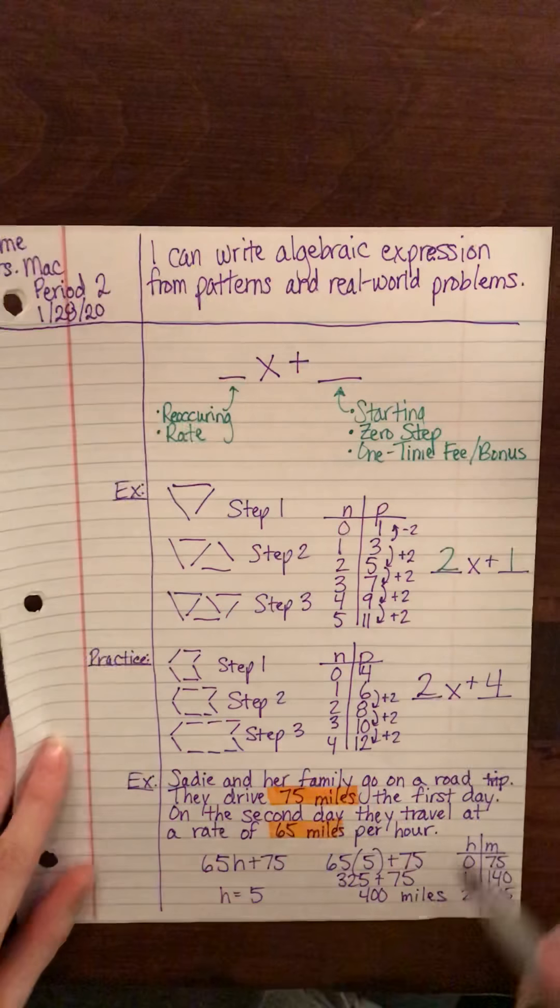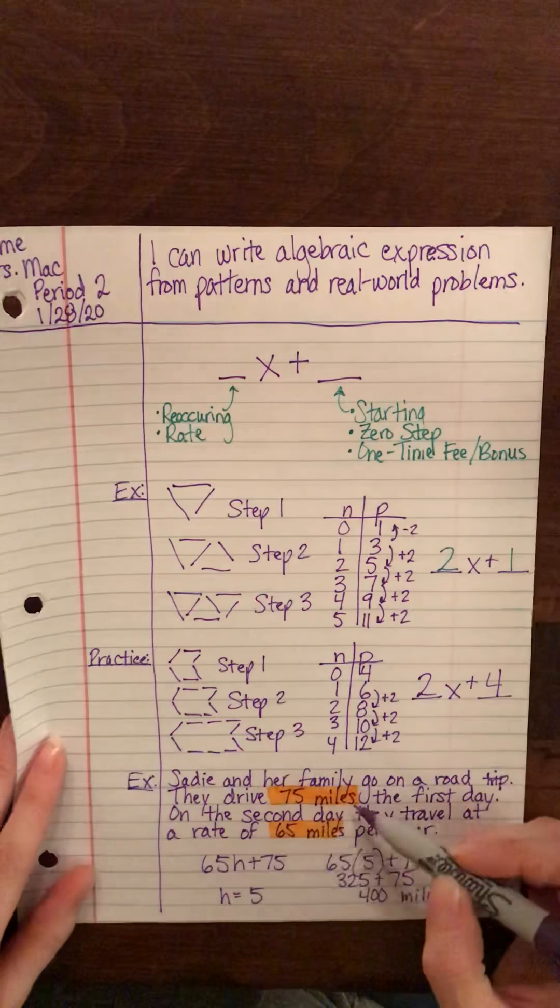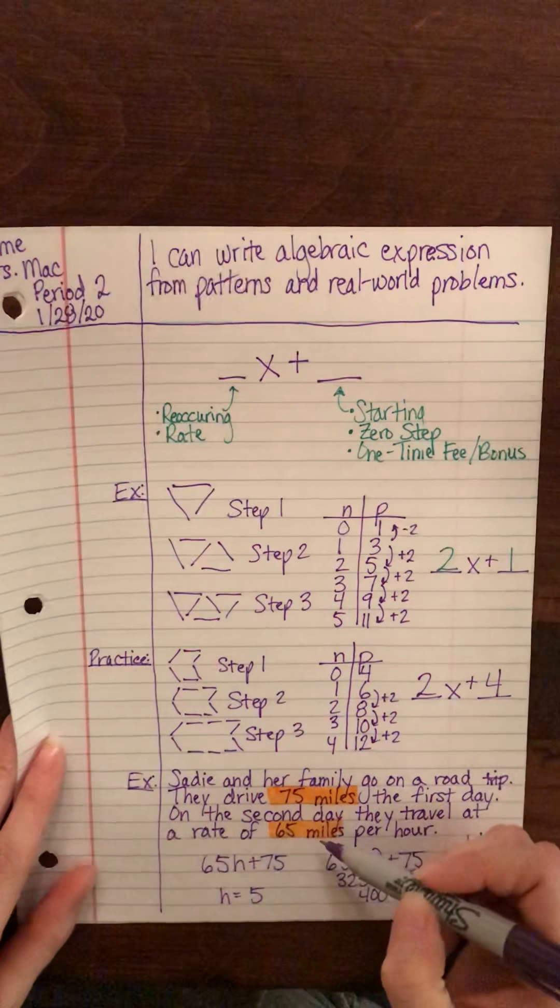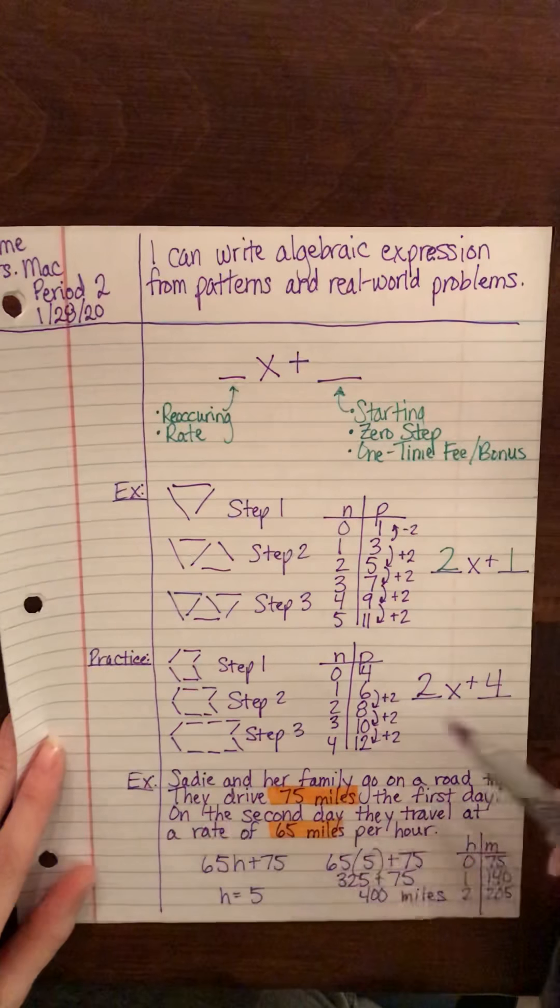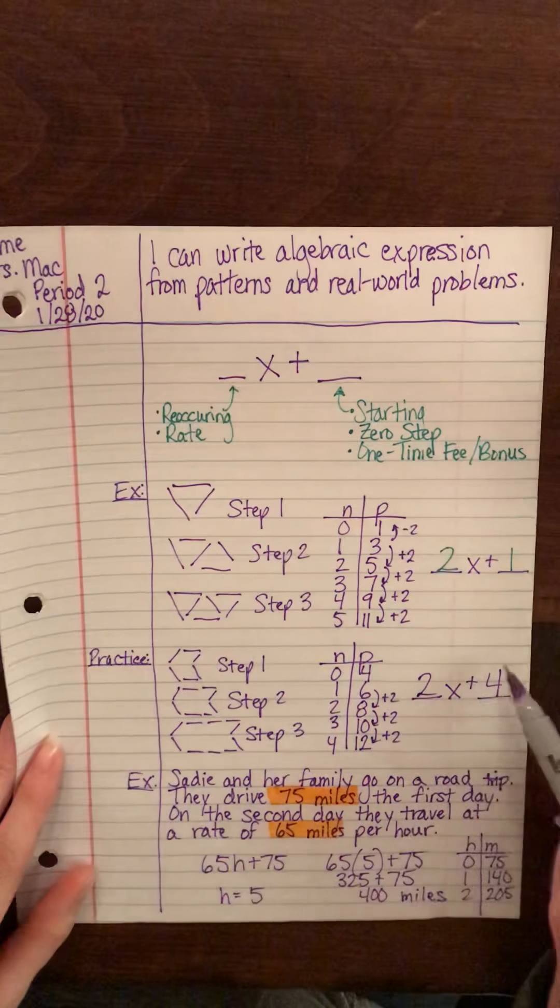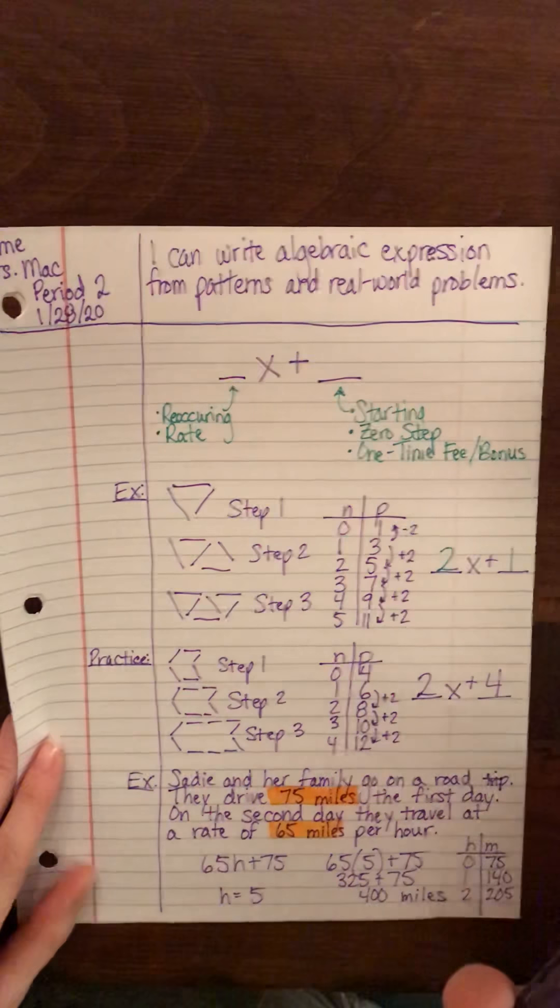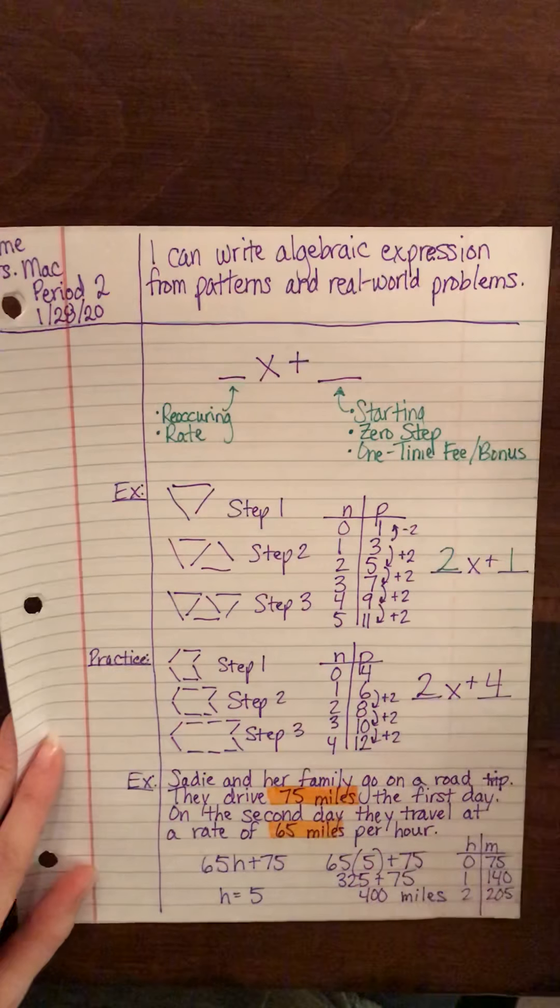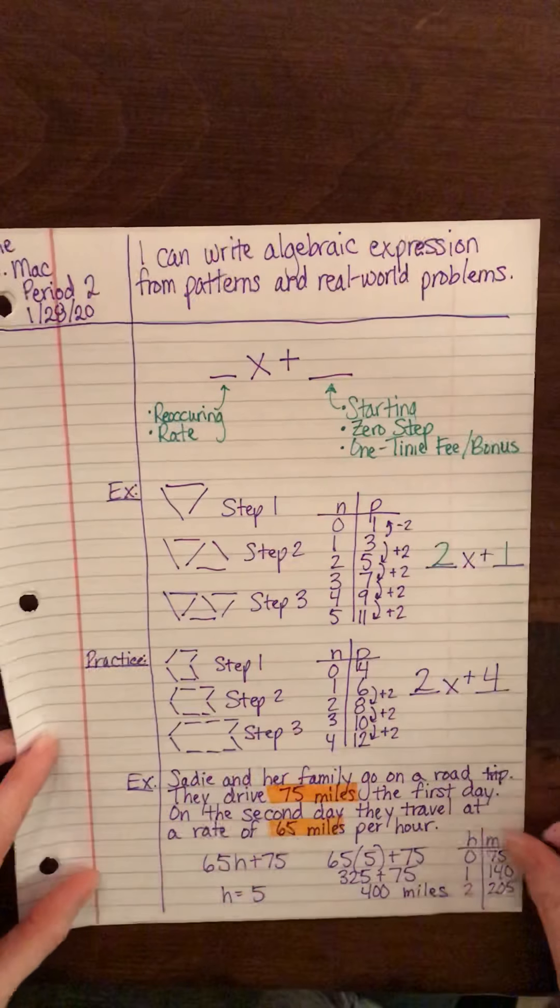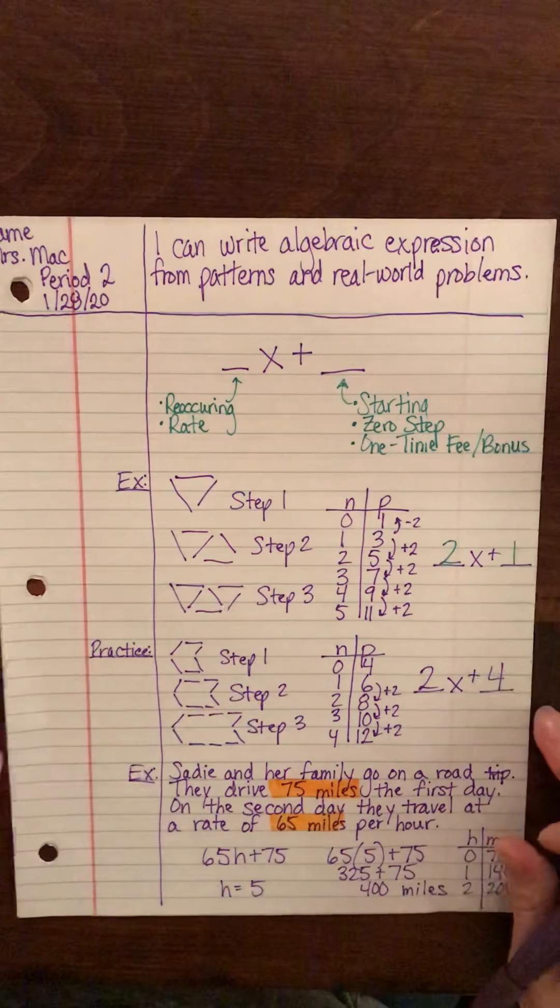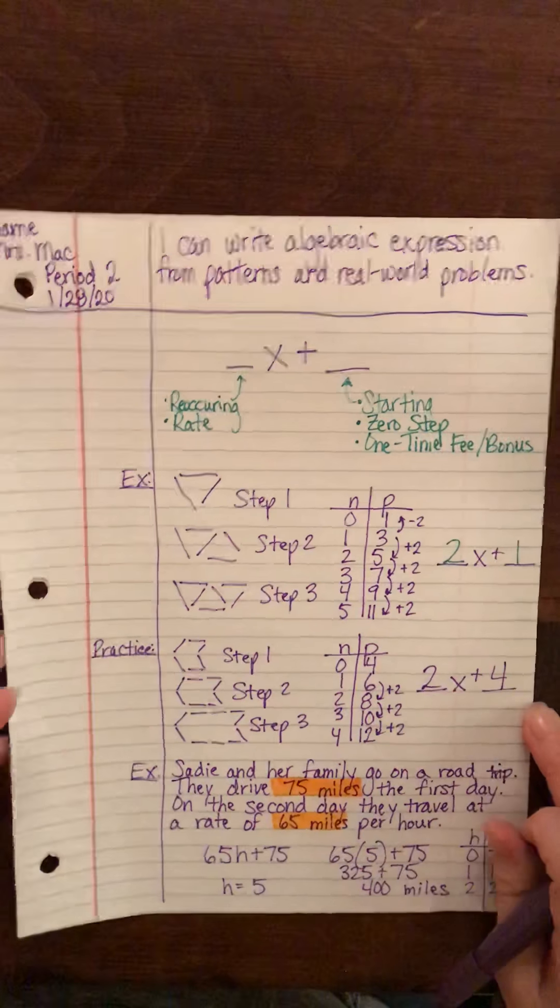So when you're writing expressions, you're looking for the starting place and the rate or the reoccurring amount. Same thing on the patterns—we looked for the starting place and the reoccurring amount. So what we're going to do now is turn this over, and I'm going to have you practice one, and then I have a worksheet that the sub is going to give you where you can work on a few of these kinds of problems.